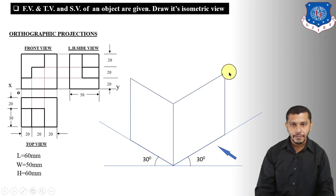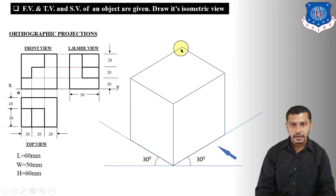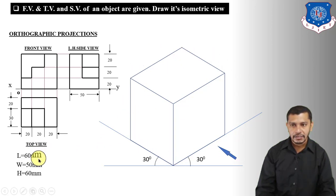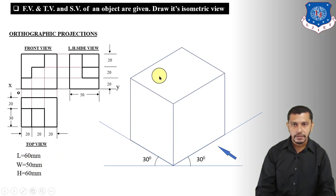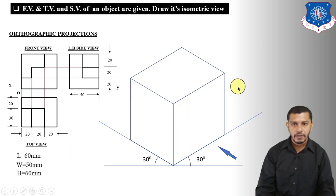From this point, draw a line parallel to the length axis, and from this point draw a line parallel to the width axis. You will get their intersection point, completing the cuboid with length 60, width 50, and height 60.